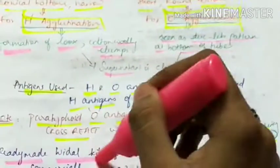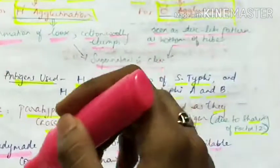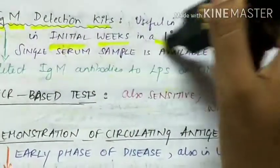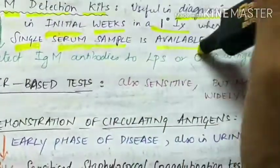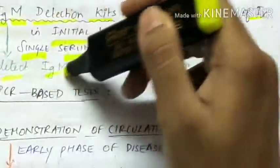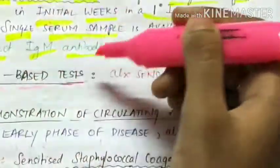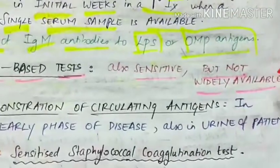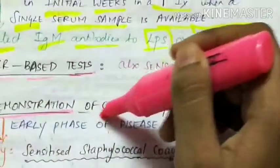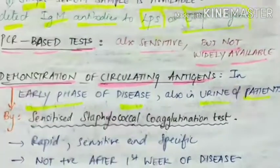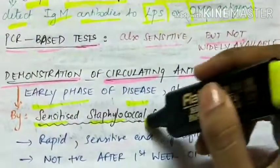Nowadays, ready-made Widal kits of stained antigens are commercially available and widely used. IgM detection kits are useful in diagnosis in the initial weeks of a primary infection when only a single serum sample is available; they detect IgM antibodies to the lipopolysaccharide or outer membrane protein antigens. PCR-based tests are also sensitive but not widely available. Next is demonstration of circulating antigens, performed in the early phase of the disease and also in the urine of patients, using the sensitized staphylococcal coagglutination test.